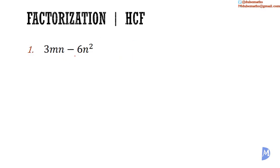Example one: 3mn added to negative 6n squared. The HCF of 3mn and negative 6n squared is 3n. What do I multiply 3n by to get 3mn? m. What do I multiply 3n by to get negative 6n squared? Negative 2n. So the factors of 3mn added to negative 6n squared are 3n and m minus 2n.